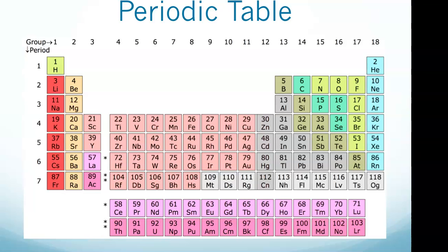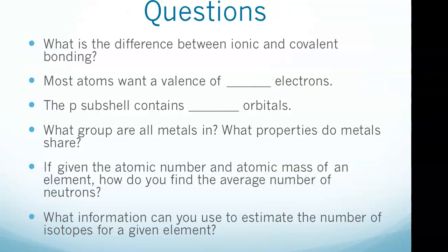To estimate the number of isotopes, look at the atomic mass. If it's a decimal, such as 79.9 — the atomic mass of bromine — then that number is averaged from more than one isotope. If it's a whole number such as 19.0, then it's fair to assume it comes from just one isotope. So the key is: decimal suggests multiple isotopes, integer suggests one.